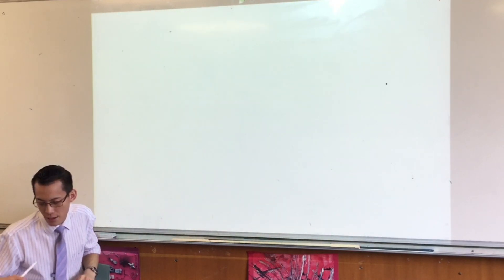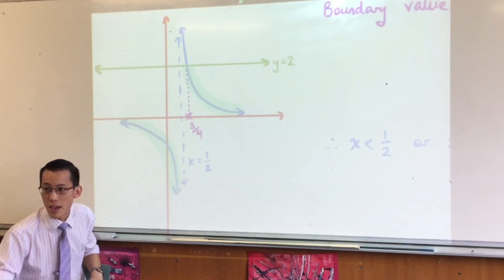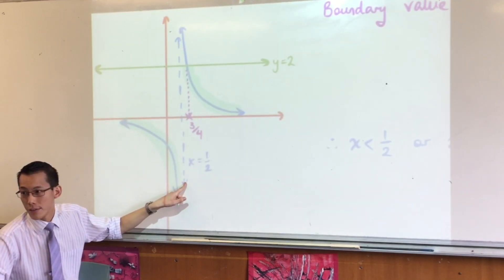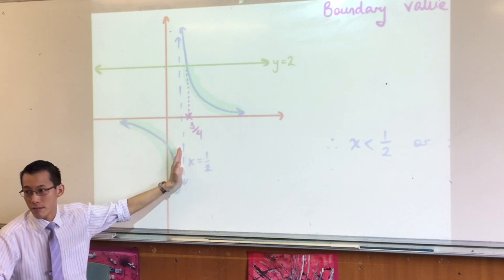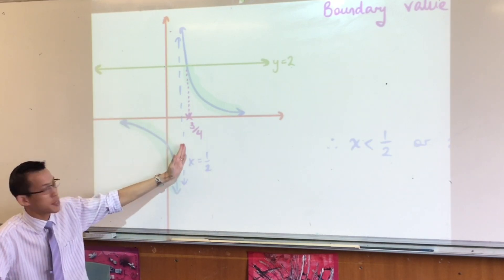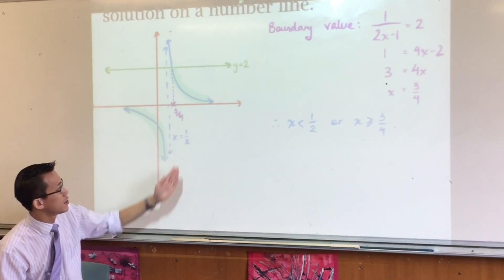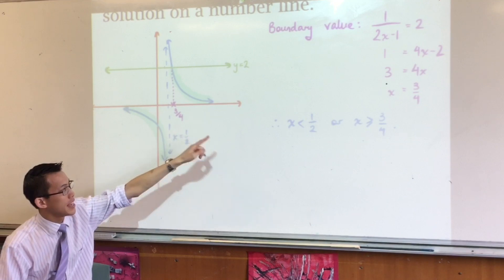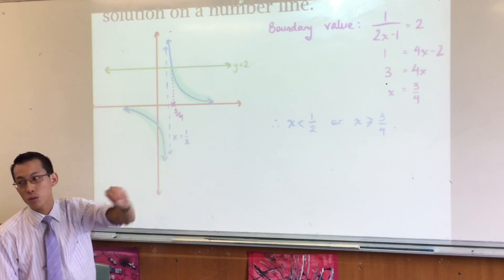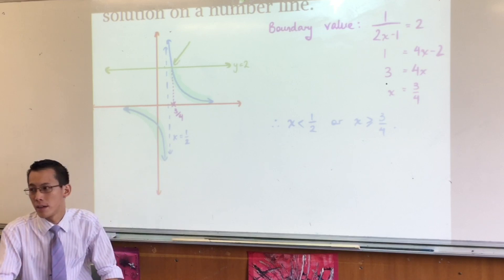Now, I didn't worry about this when I solved it the first time. Can you remember why I didn't even have to worry about this? Because, come back, there we go. Because look, what is x equals a half? It's an asymptote. You can't touch it, right? My picture tells me I can't touch it. So x has to be less than a half, as I've written over here, because you don't get to the boundary, whereas x is greater than or equal to three quarters, because look, at that point you do get the boundaries. Does that make sense?